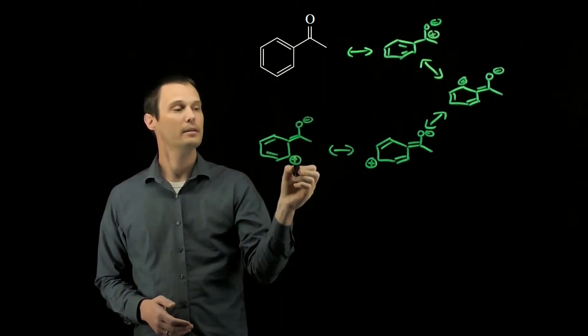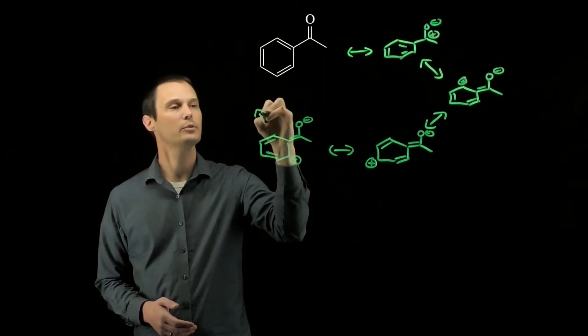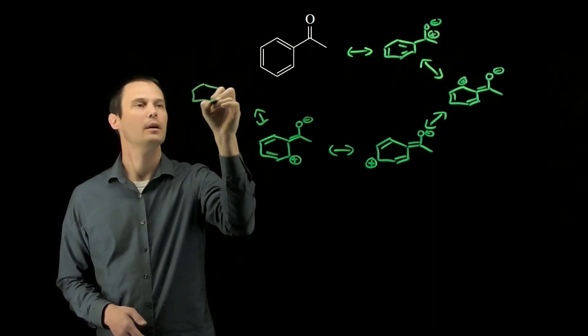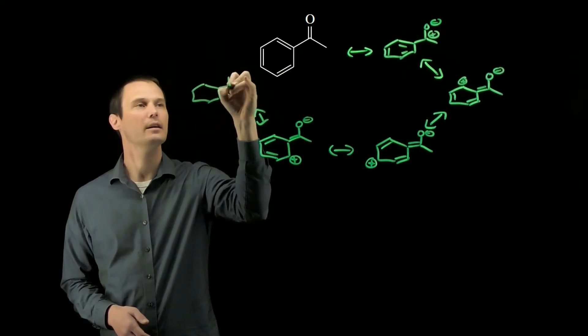Finally, this positive charge is next to the exocyclic pi bond, so we can draw one more resonance contributor where we bring the positive charge back outside of the ring.